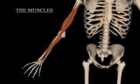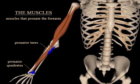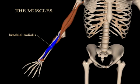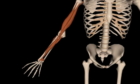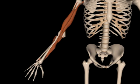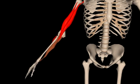Let's take a brief look at the basic muscles involved in pronation and supination. The muscles involved in pronating the forearm are the pronator teres and the pronator quadratus. The muscles that supinate the forearm are the biceps brachii and the supinator muscles. The brachioradialis serves to bring the forearm back to neutral from either pronation or supination. The pronators medially rotate the forearm, and the supinators laterally rotate the forearm.